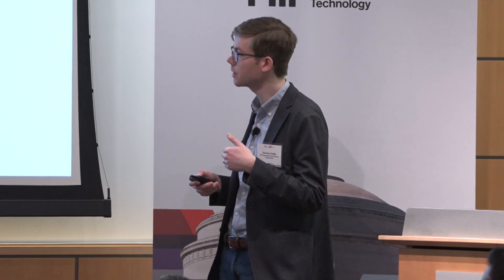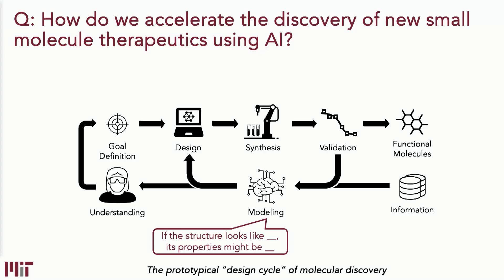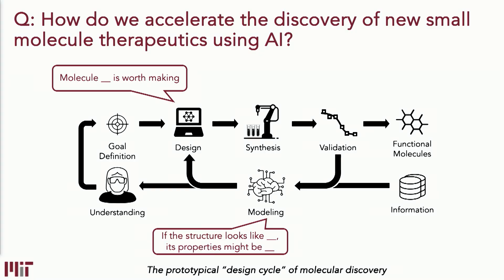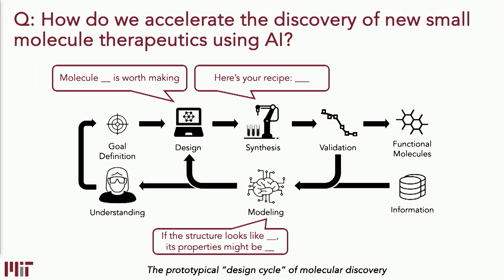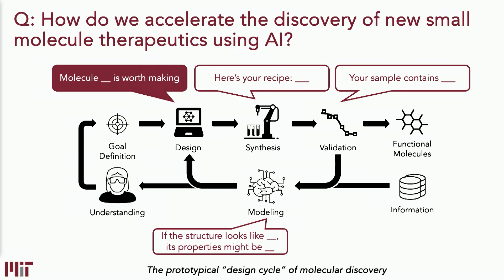In the group, we think about all sorts of questions related to accelerating this cycle: connecting molecular structure to function, selecting or designing molecular structures, designing the synthesis of those structures, and analyzing the outcomes of complex mixtures. Because we're here to talk about generative AI, one of the places where this comes in most strongly is in design — thinking about which molecular structures might have the properties we want.